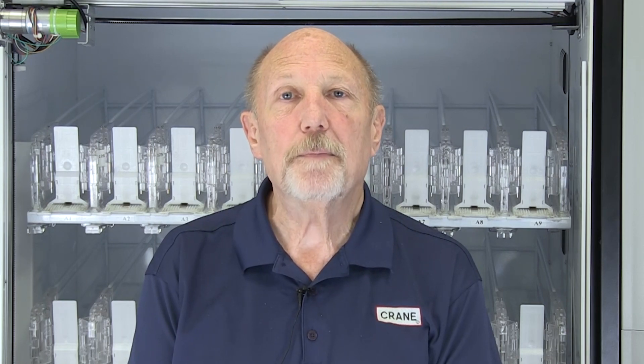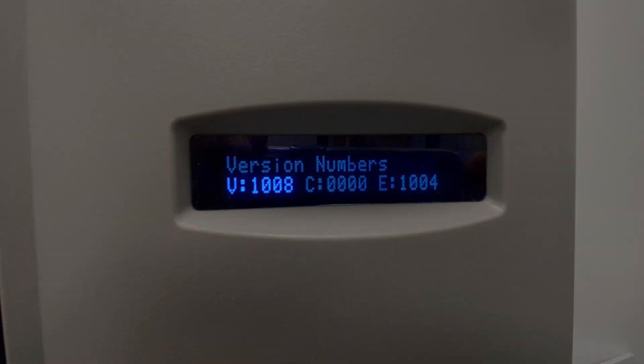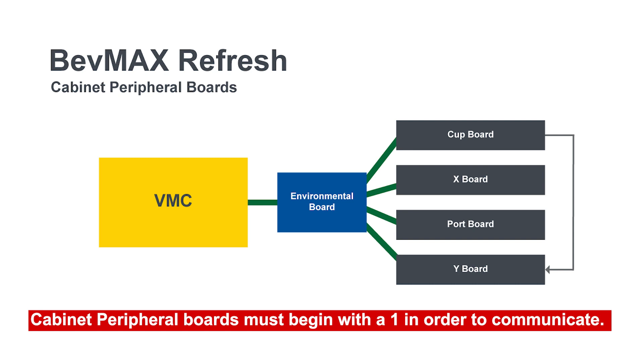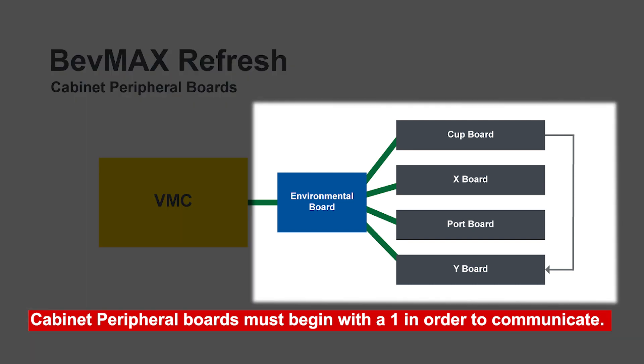When you see Coke Factory Setup Build Number, push the number 4. On the screen, you'll see V followed by about four digits, C followed by about four digits, E followed by about four digits. What we're looking for is the C and the E to have a beginning digit of 1. The V — Vending Machine Control Board — will always begin with a 1 whether I have an issue or not, because that is the software release. On the other boards, the cabinet peripheral boards, they have to begin with a 1 in order to communicate.